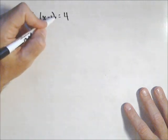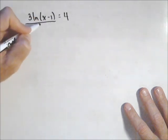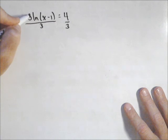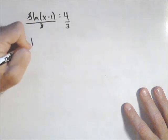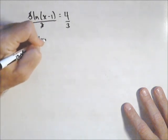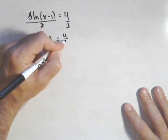Well we're gonna isolate the log. There's nothing added, so we don't have to worry about that. So we're just gonna divide both sides by three. And we get ln of x minus one equals four thirds.